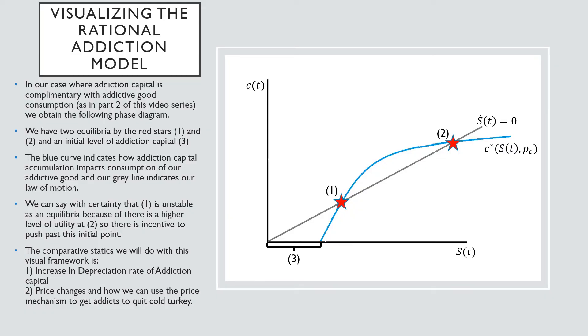the rational addiction model, we'll consider the case where addiction capital is complementary with the addictive good, as in part two of this video series. We'll obtain the following diagram. We have two equilibria, denoted by these two red stars, one and two, and an initial level of addiction capital, which is denoted by three here.